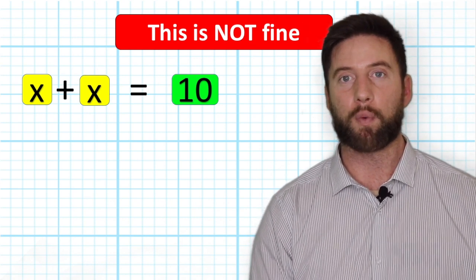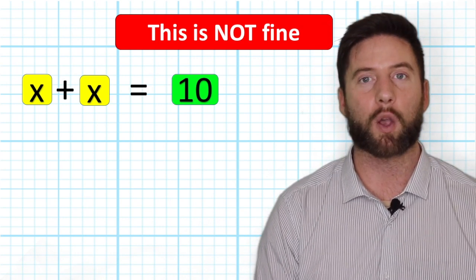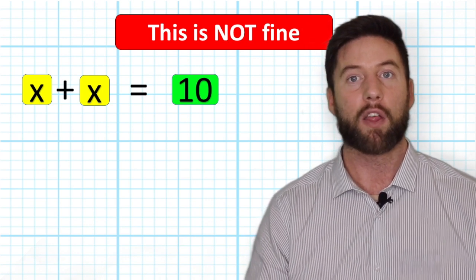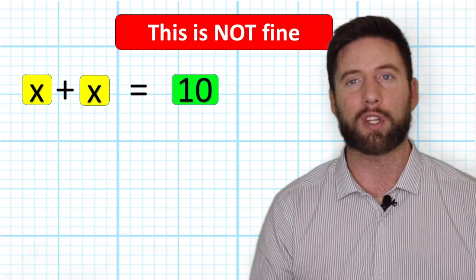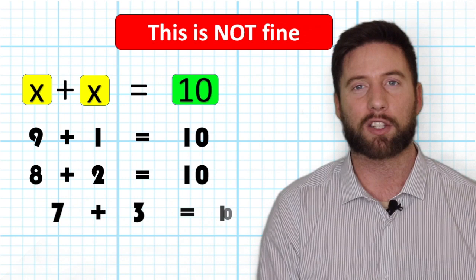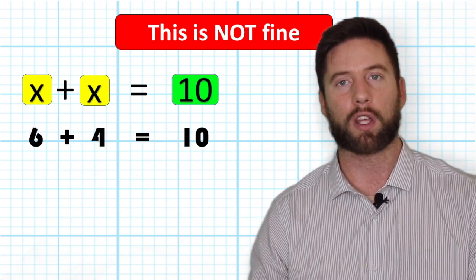But what is not fine is letters cannot stand for different values in the same problem. For example, if we had the expression X + X = 10, the equation is saying if we add X to X we get 10. There are many different ways to get 10 with two digits: 9 + 1, 8 + 2, 7 + 3, and so on. But let's say we represented it as 6 + 4 = 10.